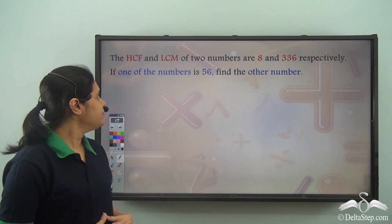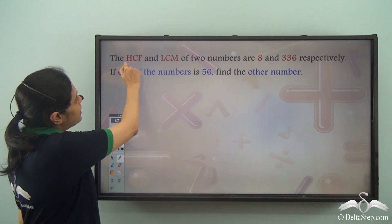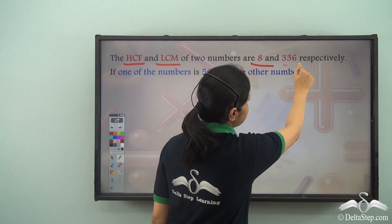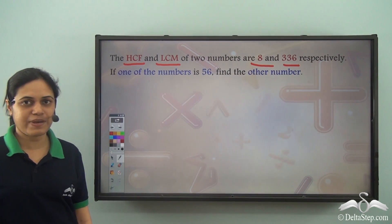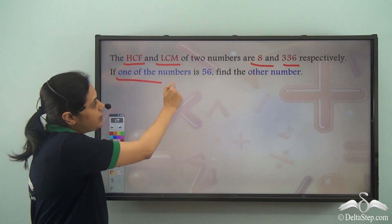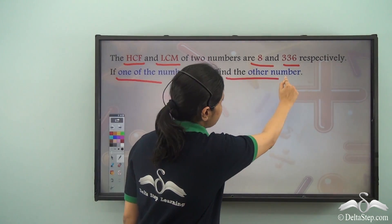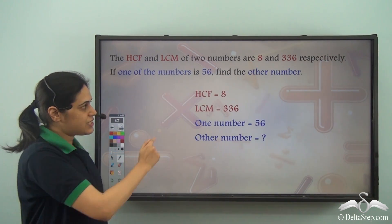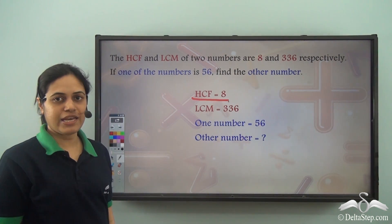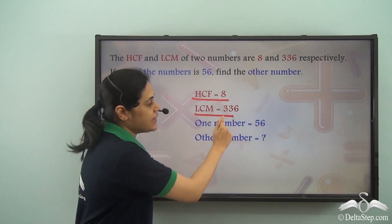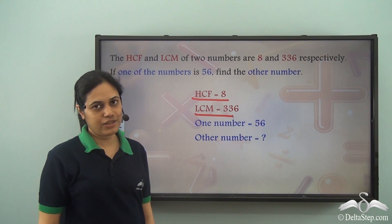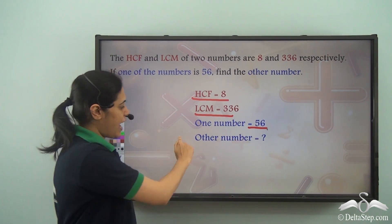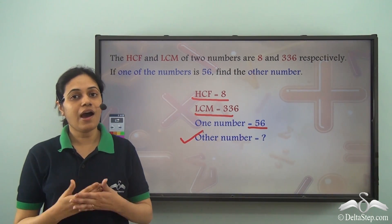Now we have a problem here. It says the HCF and LCM of two numbers are 8 and 336 respectively. If one of the numbers is 56, find the other number. So, it is given that for two numbers the HCF is 8 and the LCM is 336. One of the numbers is 56 and we need to find the other number.